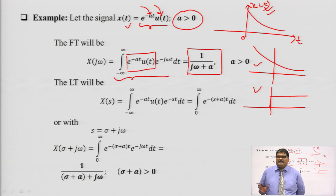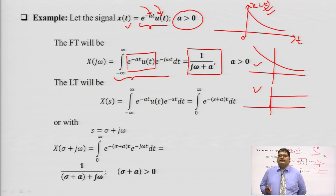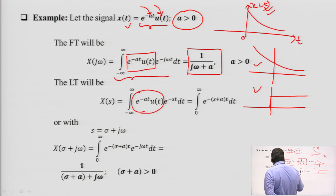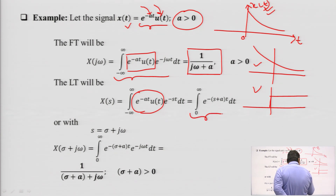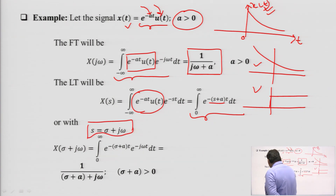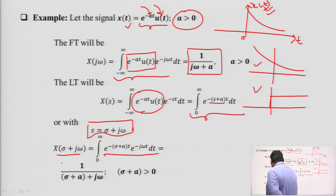Now let us apply the formula of the Laplace transform. X(s) = integral of X(t)·e^(-st) dt gives us the integral of e^(-(s+a)t) dt. Putting S = σ + jω, after integration we get 1/(σ + a + jω).